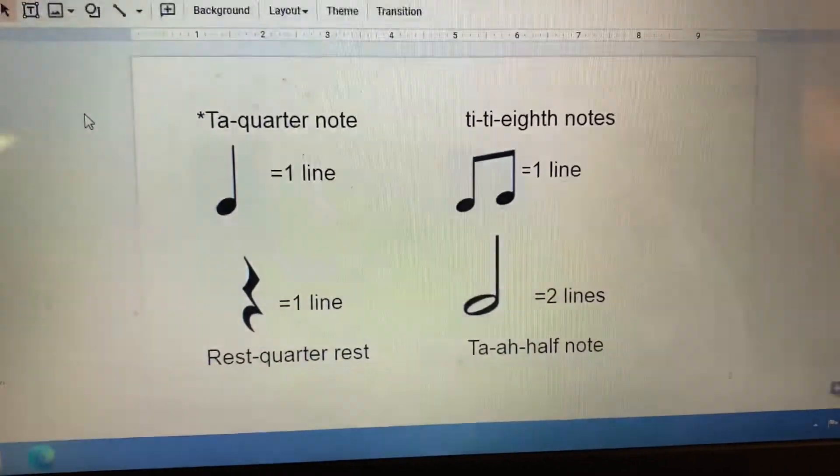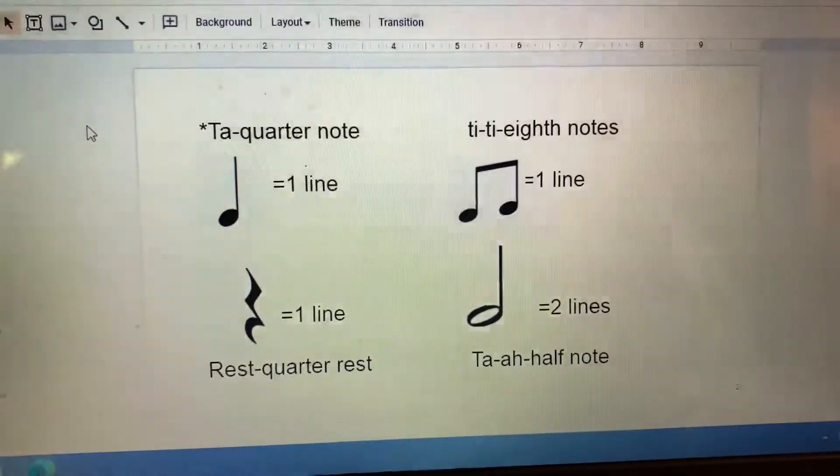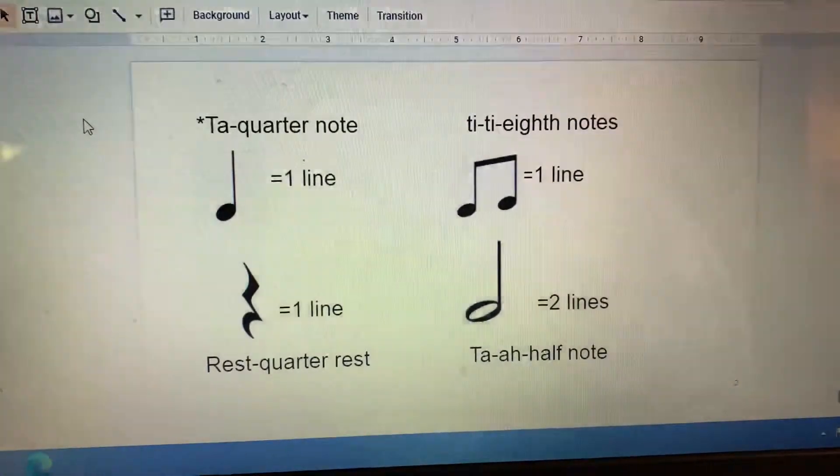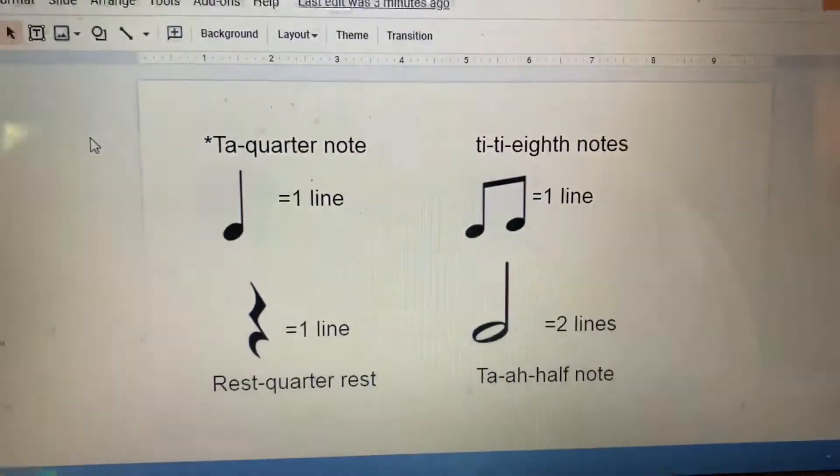And as you can see, ta, ti-ti, rest, ta half notes, and how many beats or how many lines. So ta would be one line, ti-ti one line, rest one line, ta two lines.